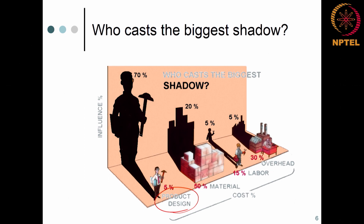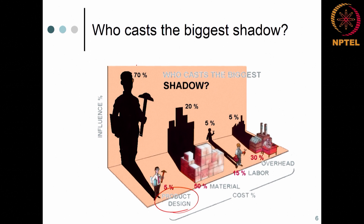How can you make use of the biggest influencer? Product design has the biggest influence. If you were to start a company and increase your time in product design from 5 to 25 percent, since everything must sum to 100 percent, you would have to reduce the other cost heads — material, labour, and overhead — by 20 percent accordingly.